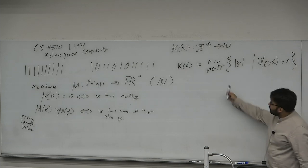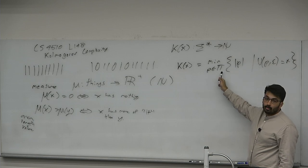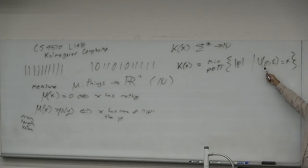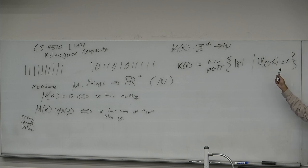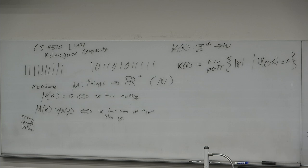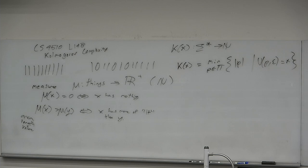It turns out K(x) is invariant to the choice of computational model — there's no real difference between a machine returning a string or printing a string, compiled vs. interpreted, and so on. K(x) is independent of language choice, and we'll prove the invariance theorem today. It's a simple, elegant definition — there's a book by Li and Vitányi with 900 pages just on the properties of this one function.